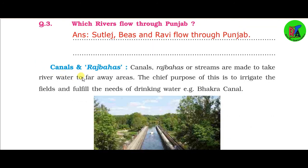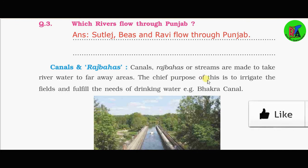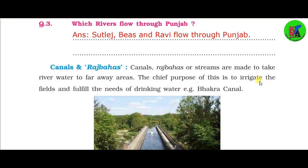Next are canals and rajvars. Canals, rajvars, and streams are made to carry river water to far-away areas. The chief purpose of this is to irrigate the fields and fulfill the needs of drinking water. For example, the Bhakra canals are used for irrigation and drinking water needs.